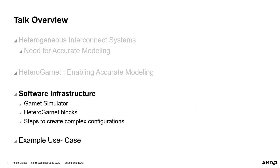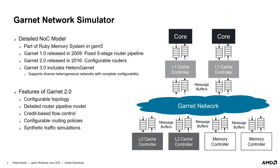Garnet is a detailed network-on-chip model that was introduced in 2009. It is part of the Ruby memory system of Gem5. Garnet 2.0 was added in 2016, which allowed multi-stage pipelining within the routers. Heterogarnet is now being released as Garnet 3.0 and will support complete heterogeneity. Garnet includes complete flexibility in terms of interconnect modeling, with support for credit-based flow control, several routing and deadlock prevention mechanisms, and synthetic traffic studies. Garnet is integrated into Ruby and the rest of Gem5 through message buffers connected to cache controllers and memory controllers, enabling full system simulations as well as easy integration into GPU simulations.